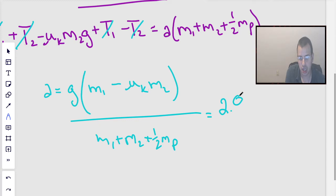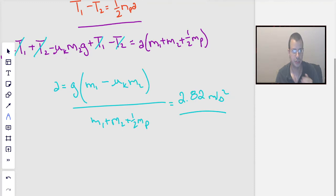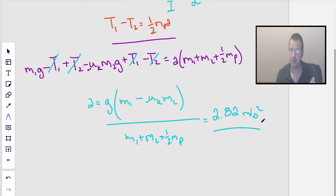One key thing to note here is that this answer is less than 9.8 meters per second squared. It would be unreasonable for this block to fall faster than gravity. So it makes sense, it's kind of a good check—it's falling slower than gravity, might be correct.